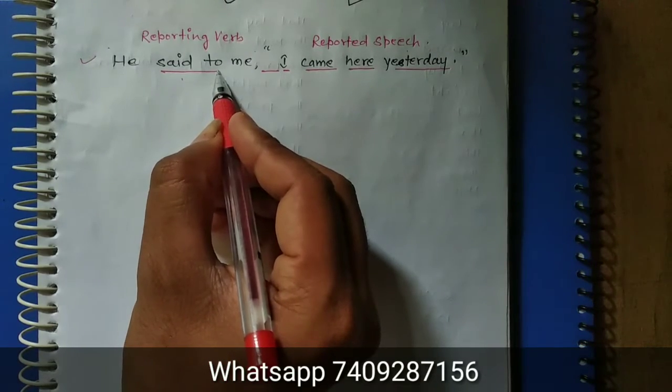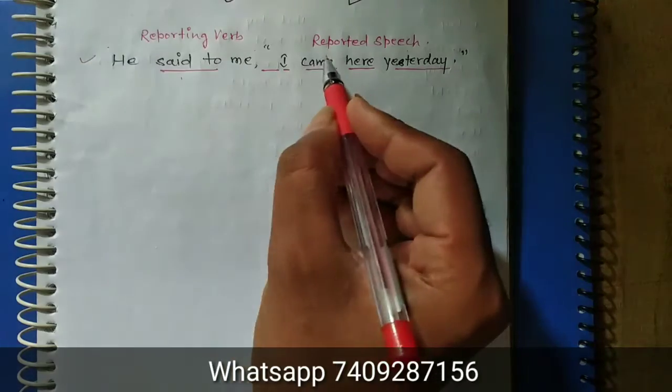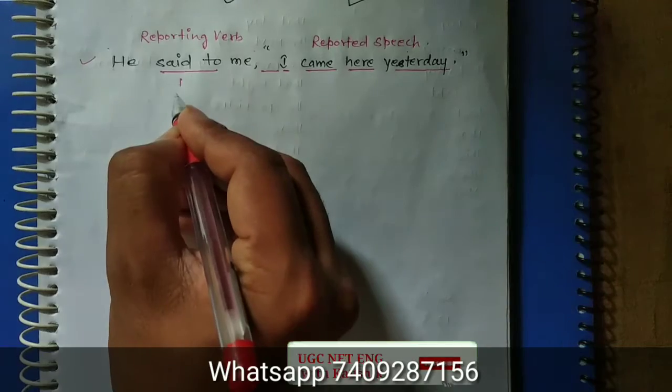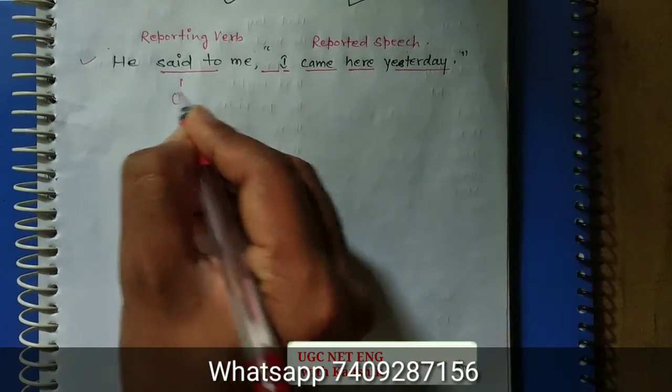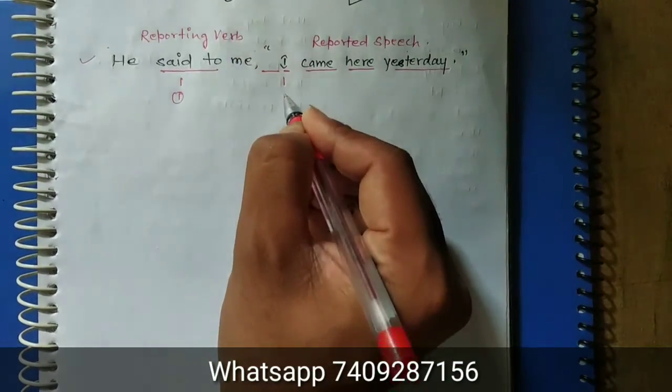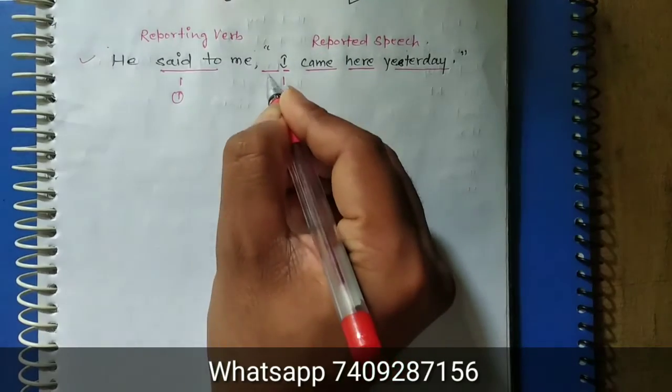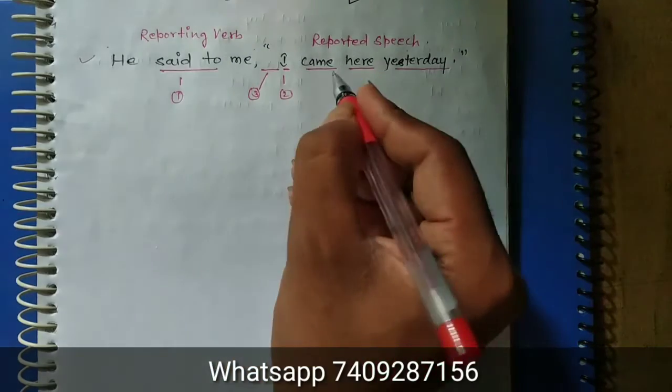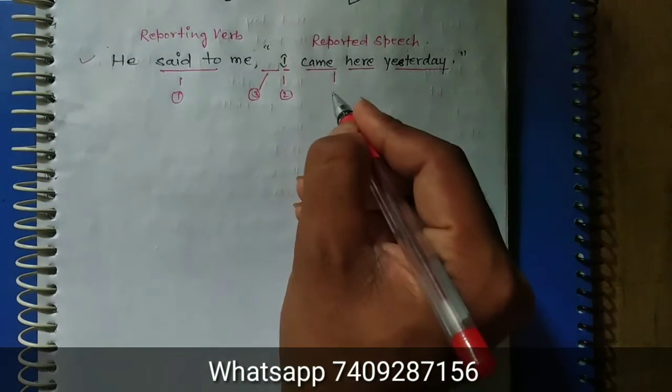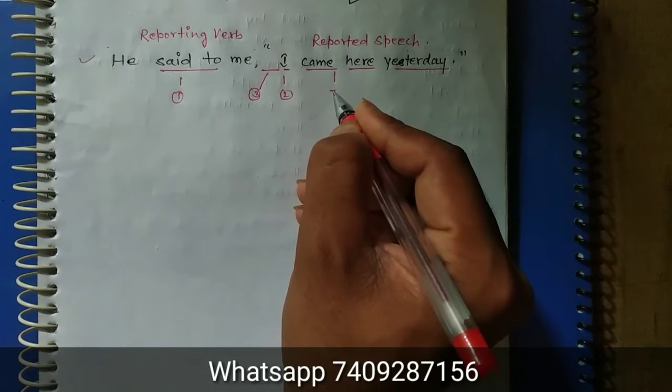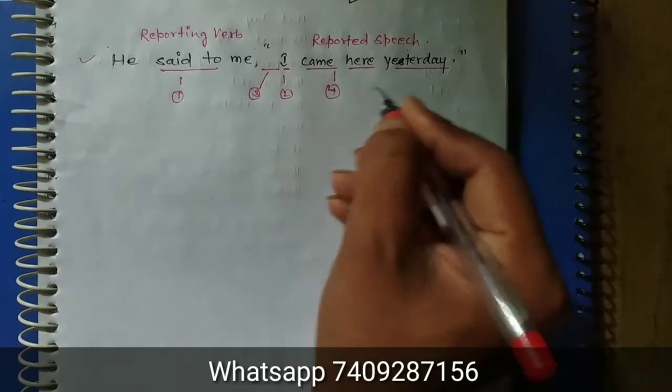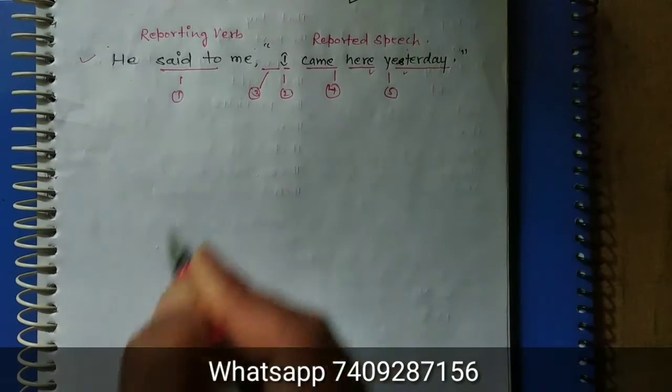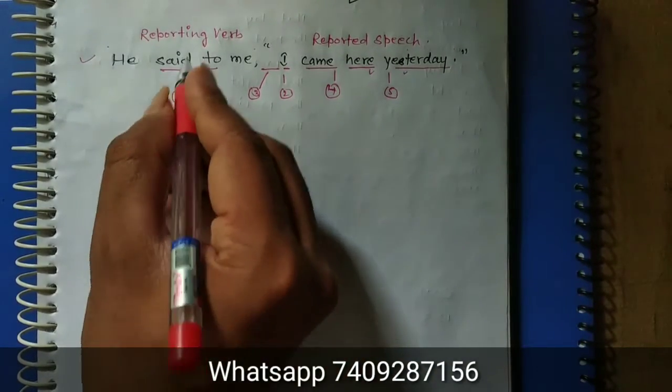So the first change will be here, the second change will be here, and in between the third change will be here. It is also called connector. And then we will change the tenses, so we will call it the fourth one. And then the last one is the fifth one - in some words we make changes.